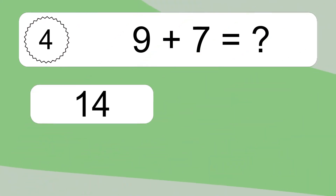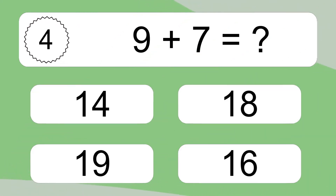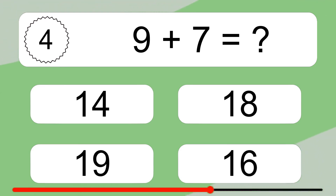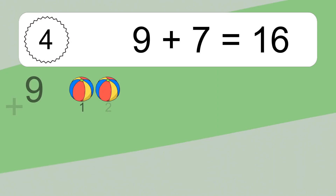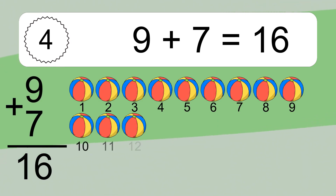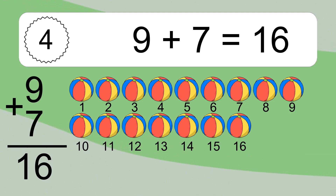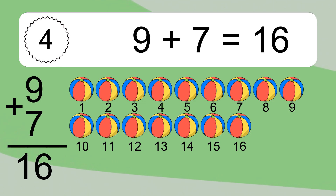9 plus 7 equals what? 9 plus 7 equals 16. Let's count it: 1, 2, 3, 4, 5, 6, 7, 8, 9, 10, 11, 12, 13, 14, 15, 16.